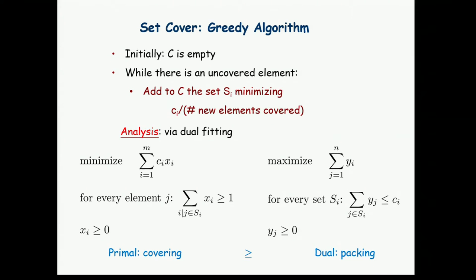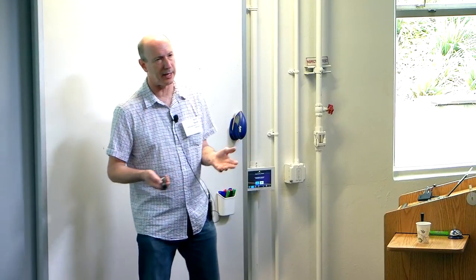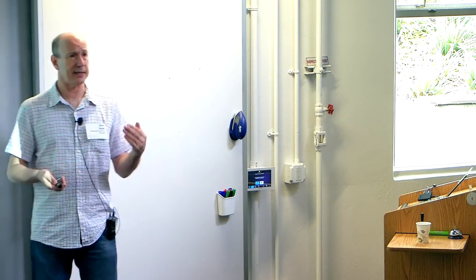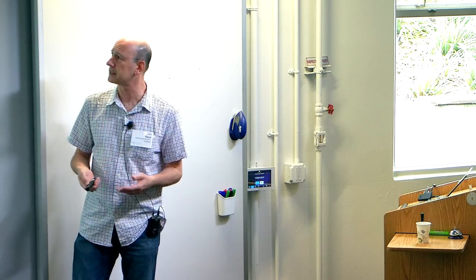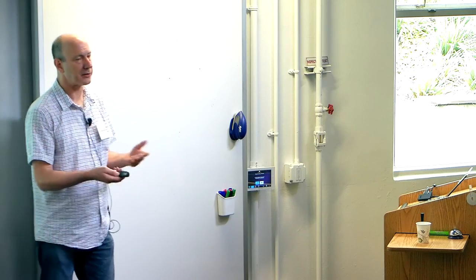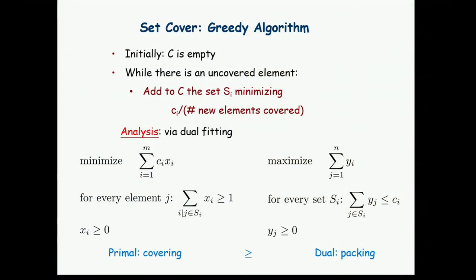The classic algorithm for set cover is the greedy algorithm. We iterate until all elements are covered. At any point, we pick the set which minimizes its cost divided by the number of new elements it adds to the cover — that is, the set with minimum average cost in terms of residual coverage. There are many ways to analyze this algorithm; I'll show one way through dual fitting.